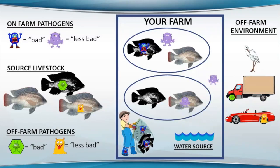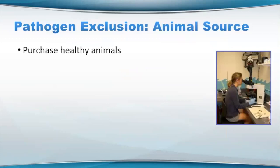This is a kind of a busy picture, but we're going to come back to it later. On the upper left, I've got on-farm pathogens — remember, you're going to have some of these organisms that may be bad or less bad on your facility. Then we've got potentially new organisms coming in with their own types of pathogens. You've got a consideration for your water source, your people, and then things coming in and off the farm that are not your potential livestock.